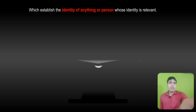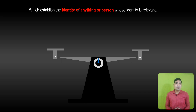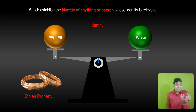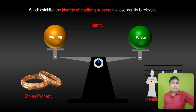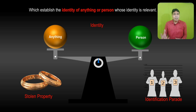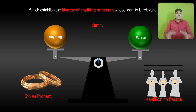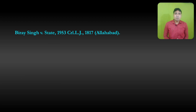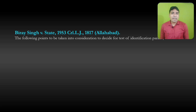Section 9 also covers facts which establish the identity of anything or any person whose identity is relevant. For example, if a property is stolen, any fact that establishes the identity of that property becomes relevant. Similarly, if a witness saw a person commit an offense and can identify them in person — even without knowing their name — that identification becomes relevant under Section 9. This is the basis of the identification parade, which is mentioned under Section 9.